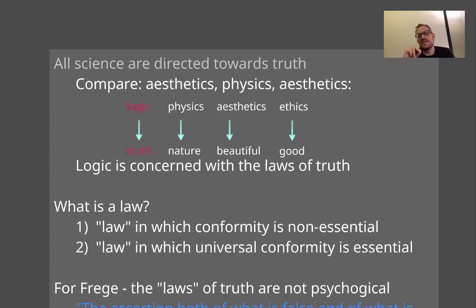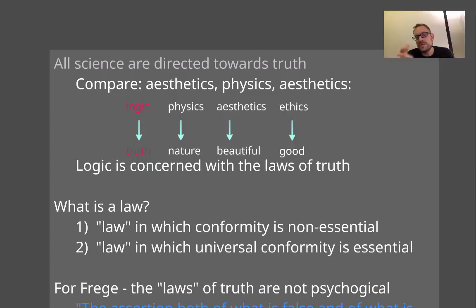There's a second criteria as well. It's not just the truth functionality of an argument that makes it good, but also that an argument really does relate to the truth — that is sound argumentation. Logic ultimately is concerned with the laws of truth. So what exactly is a law? Well, there are two different ways we can understand a law. One way is to say you have laws in which conformity is non-essential — the law can exist without people obeying it. For instance, it's illegal to steal someone else's property, but that law can exist even if people don't follow it.